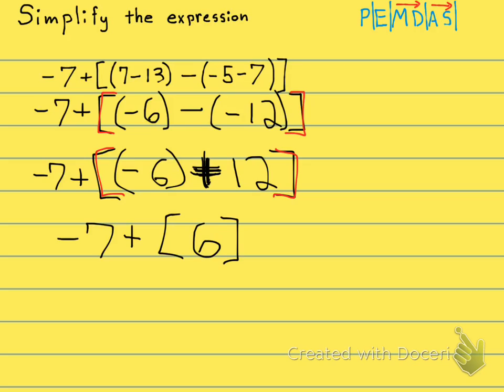Okay, and now I'm down to one last operation. Negative 7 plus 6. And negative 7 plus 6 is a negative 1. And that's it. You're done. Put a box around your answer.